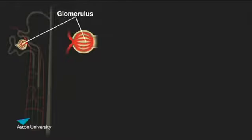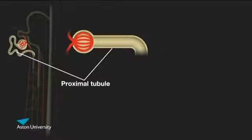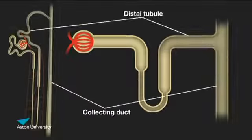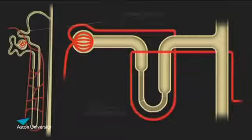Each nephron begins with a Bowman's capsule wrapped around a capillary ball, the glomerulus, which becomes a tubule that eventually forms the loop of Henle before collecting into tubules and ducts that empty into the bladder.